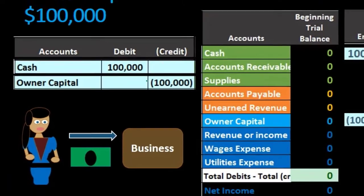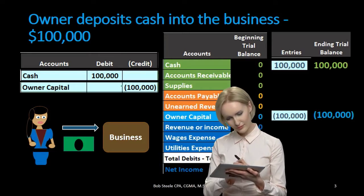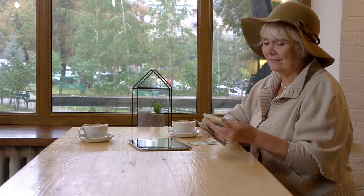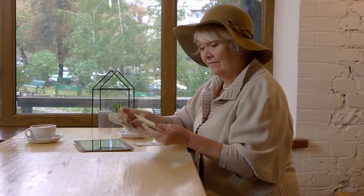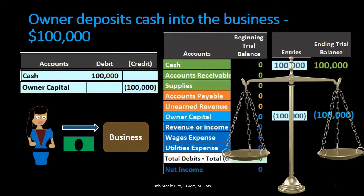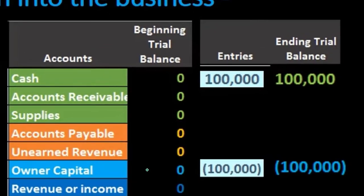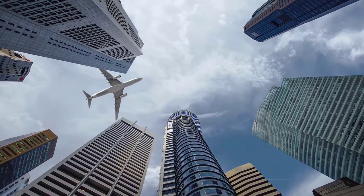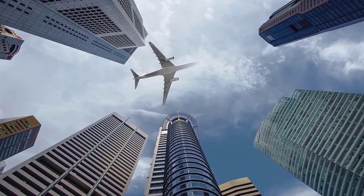We knew we were going to have a credit because we debited cash and therefore must credit some other account. To double-check: the capital account has a credit normal balance, and it should be going up because the company owes the owner more money — the net value of the company has increased. To make something go up, we do the same thing to it as its normal balance, which in this case is a credit.